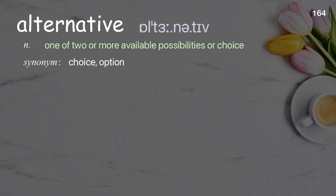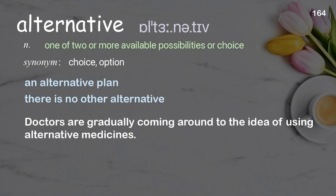Alternative: one of two or more available possibilities or choices. Examples: an alternative plan; there is no other alternative; doctors are gradually coming around to the idea of using alternative medicines.